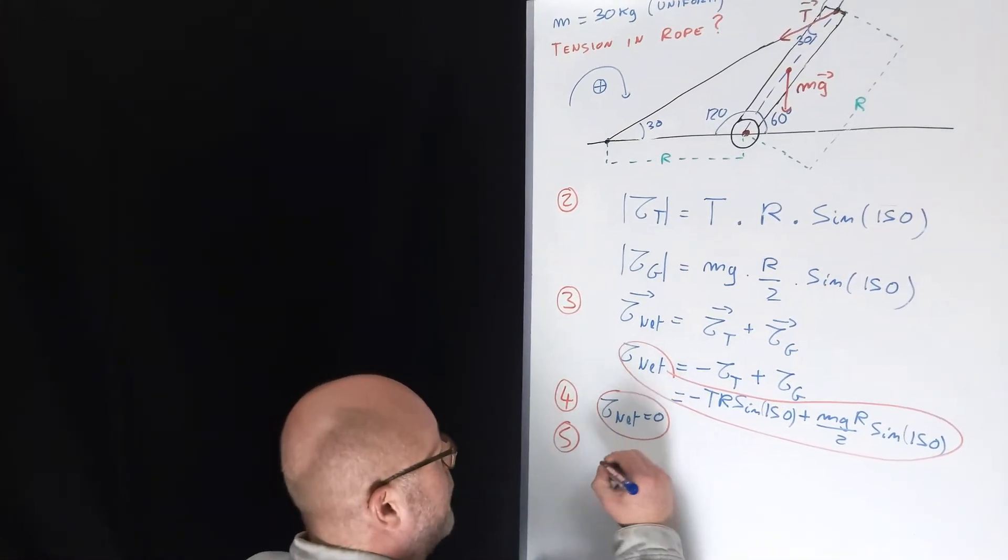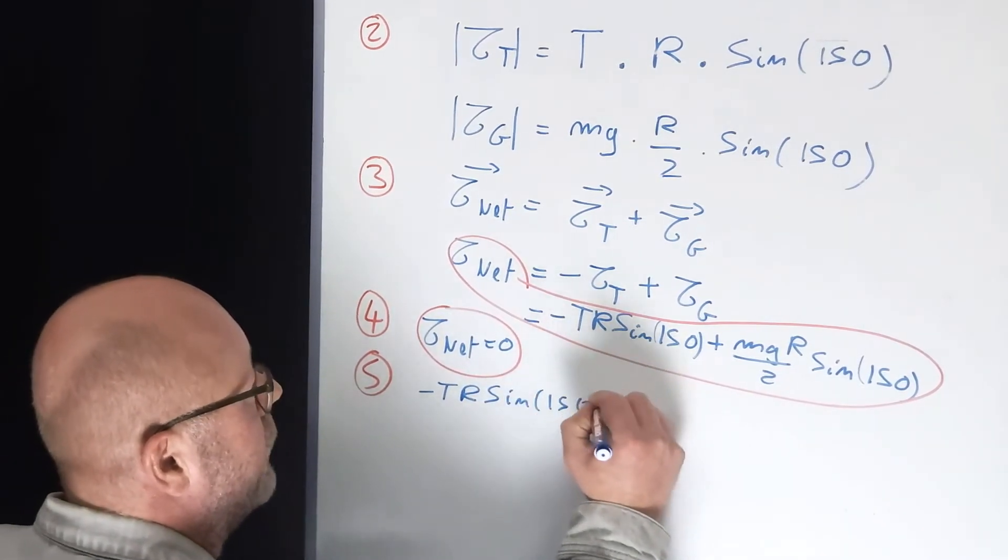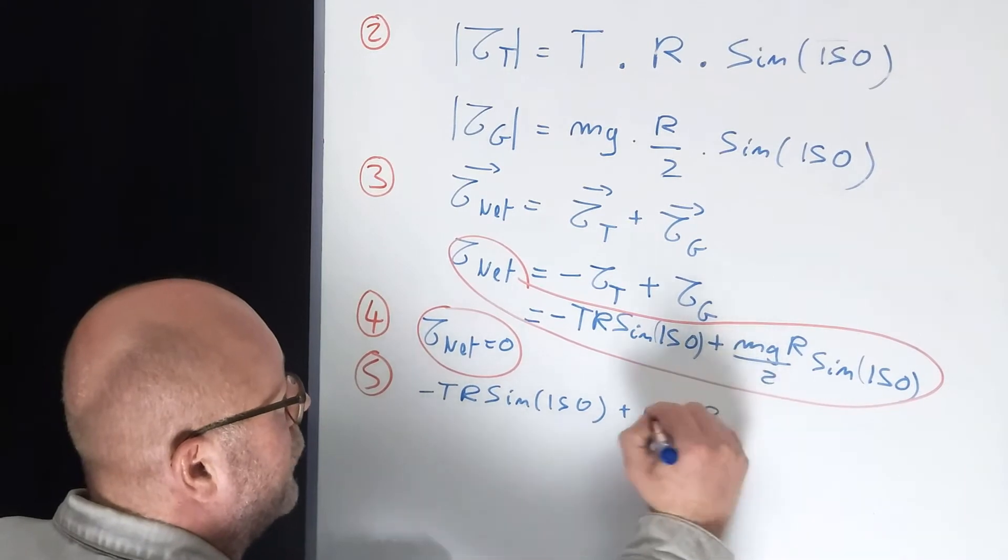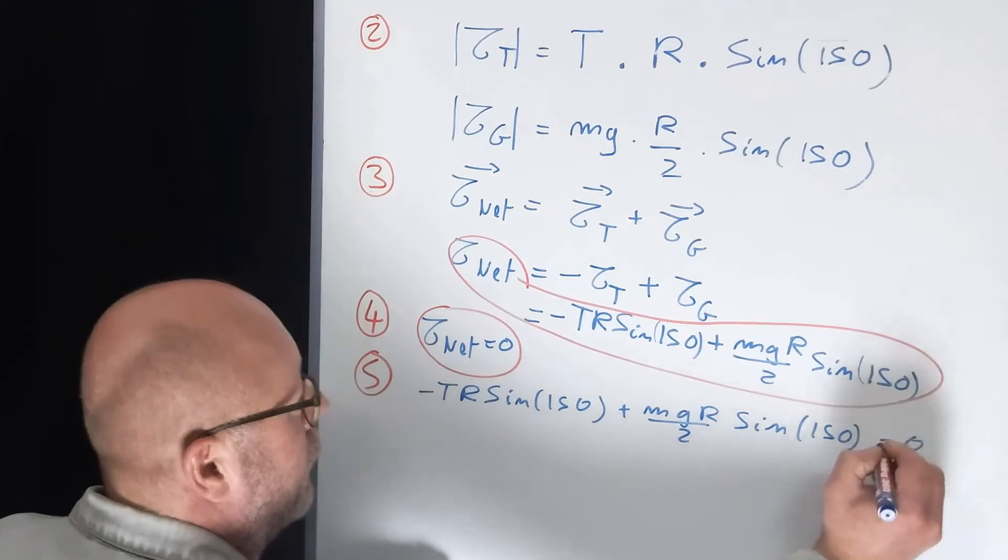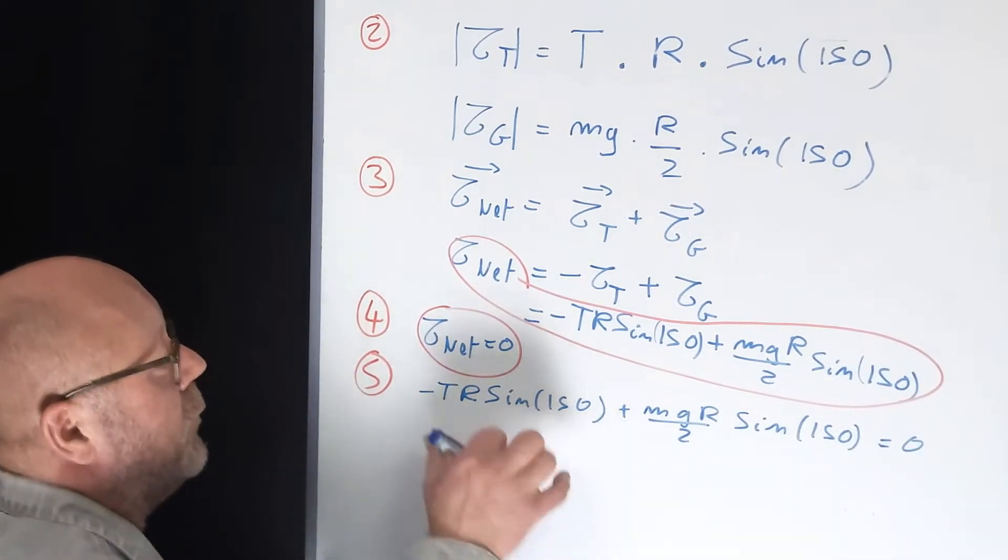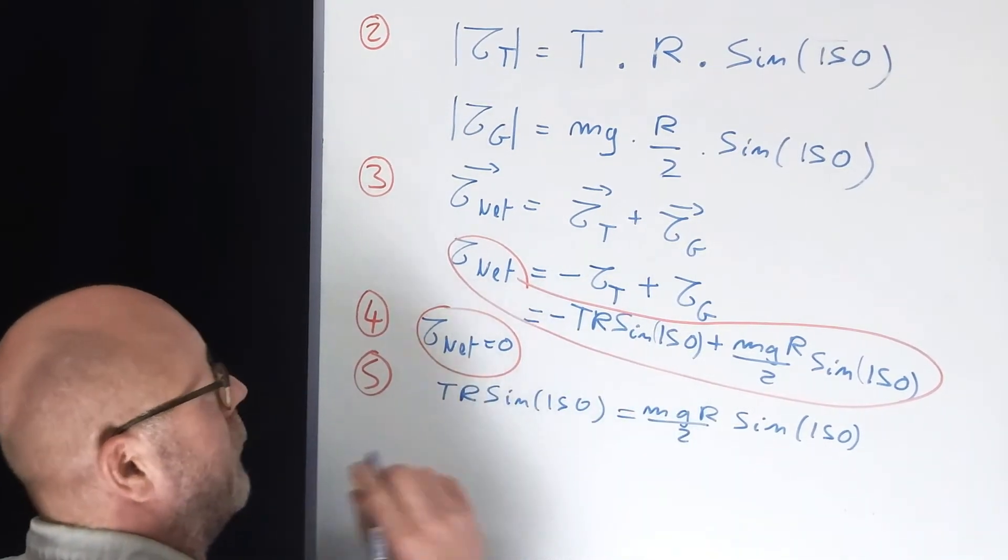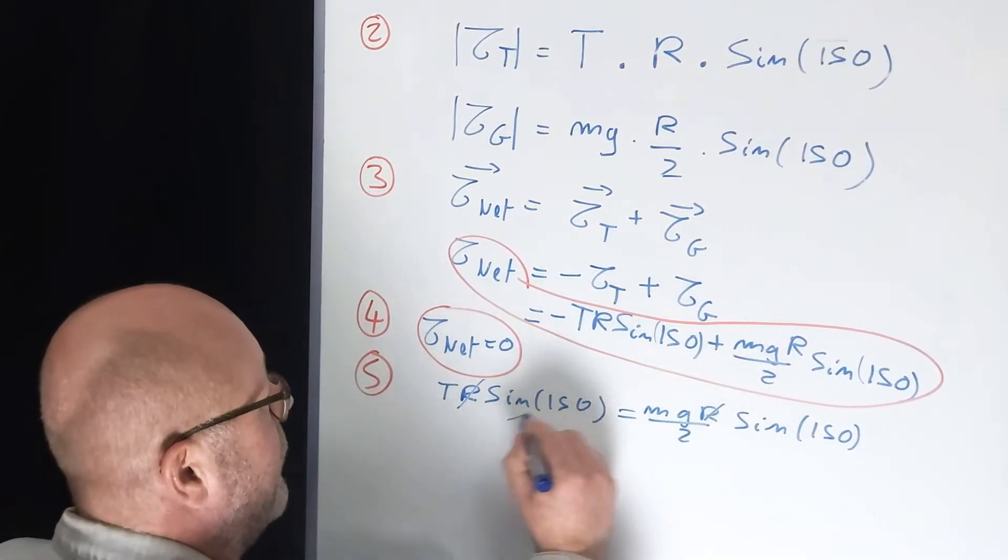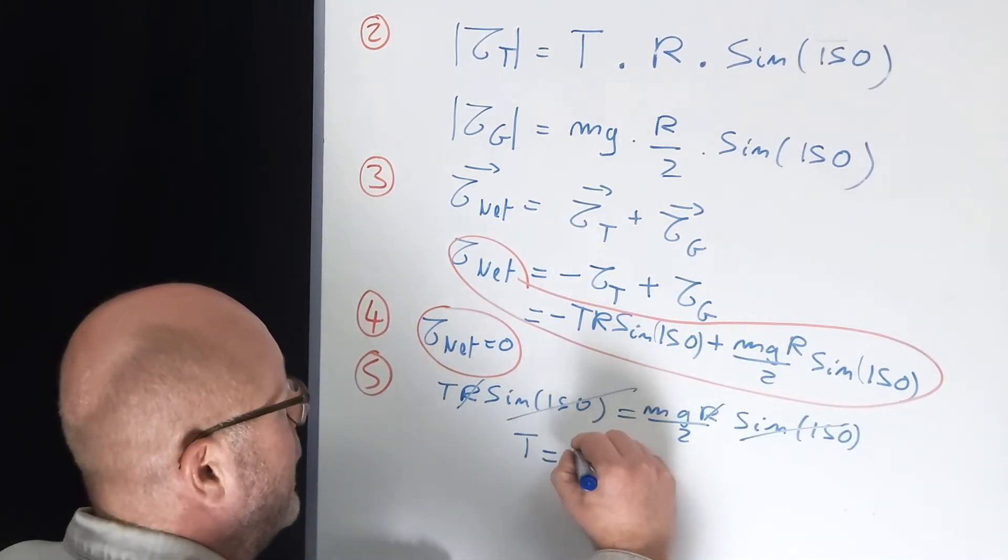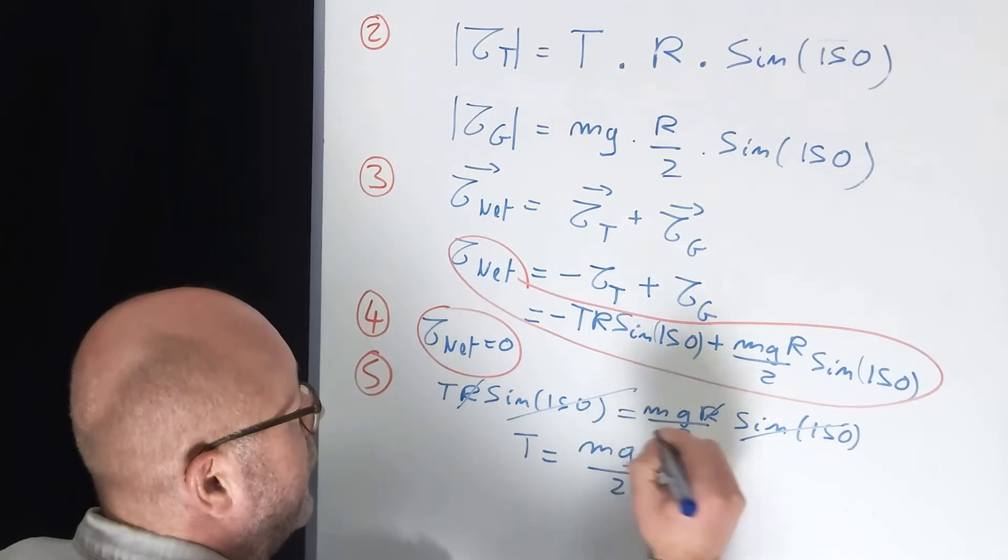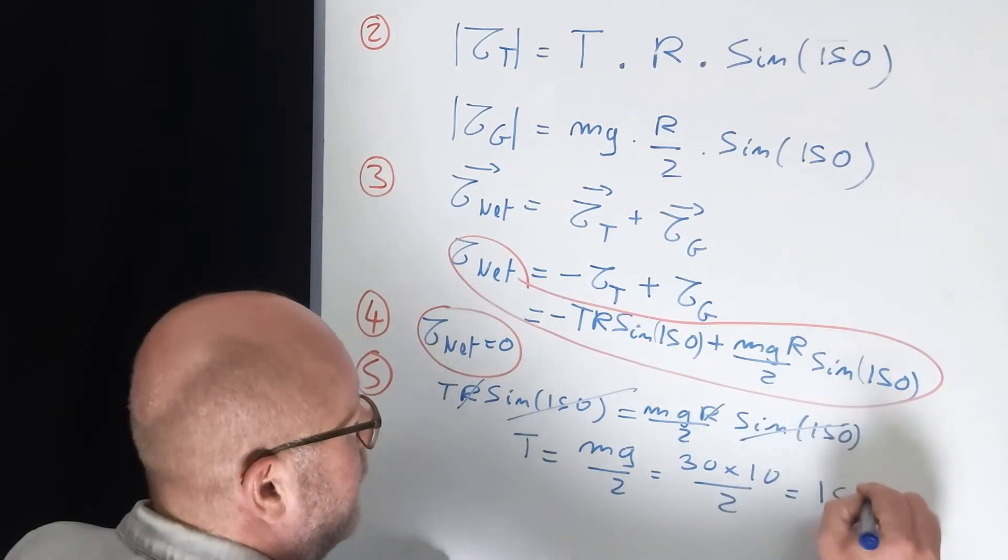We can write down that minus T R sin of 150 plus mg r over 2 sin 150 equals zero. I can rearrange this to put this on the other side. The Rs cancel. The sin 150 cancels. And I've got my tension just being mg over 2, which is 30 by 10 divided by 2, 150 newtons.